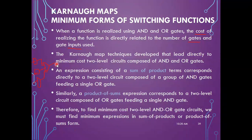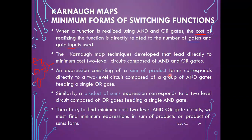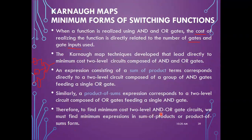A sum-of-products expression corresponds to a two-level circuit: one level has AND gates, and the next level has an OR gate. Similarly, a product-of-sums expression corresponds to a two-level circuit composed of OR gates feeding a single AND gate. Therefore, to find the minimum cost two-level AND-OR circuits, we must find minimum expressions in sum-of-products or product-of-sums form.